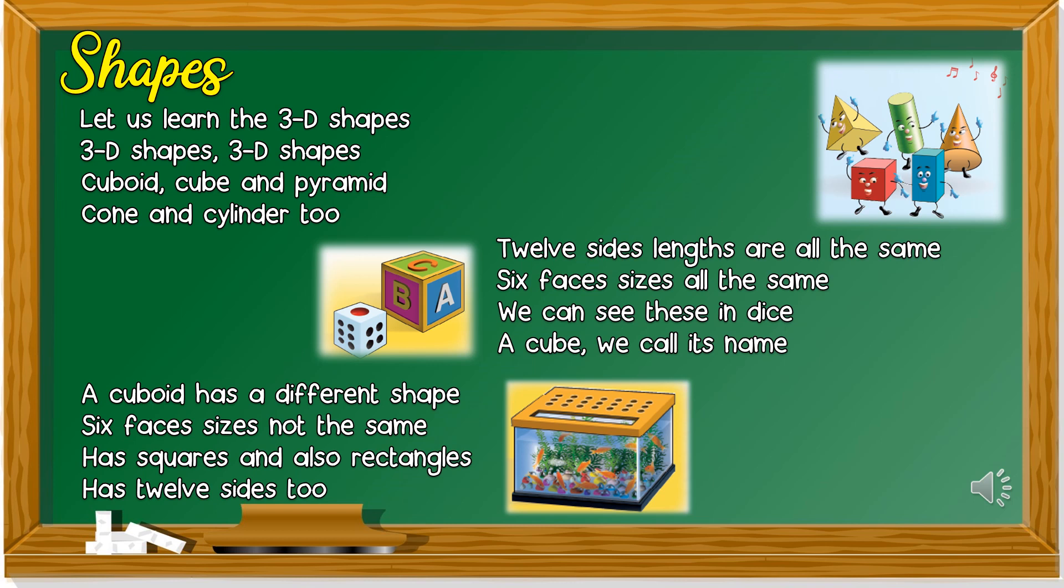In this song, there are five 3D or three-dimensional shapes mentioned. The first one is cuboid, cube, pyramid, cone and cylinder. We are going to take a closer look at these five 3D shapes. Before that, let's do some revision on the 2D shapes you have learned.